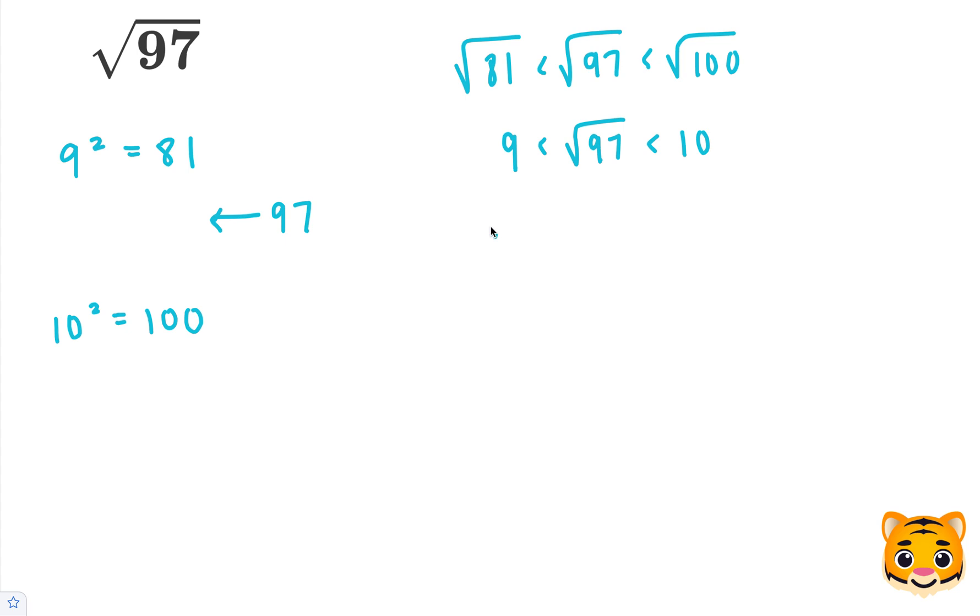We can try values like 9.8 to start. Let's see what 9.8 times 9.8 is, and if it's close to 97, that'll be our approximation.